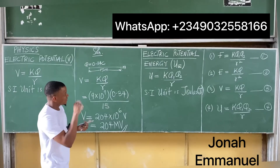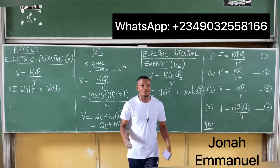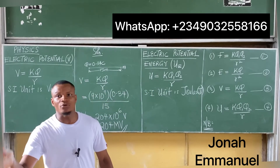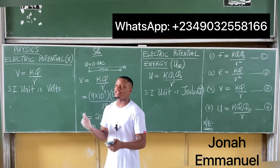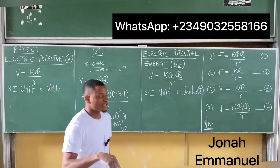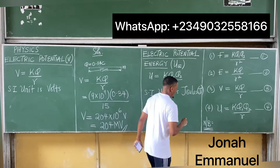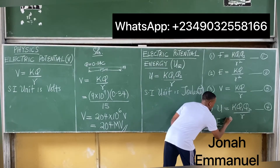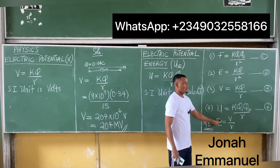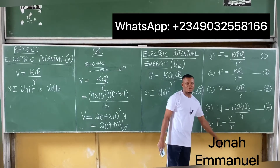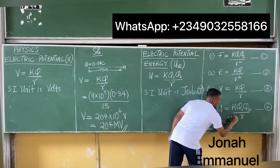An important note: electric field intensity and electric potential are related by E = V/r, where r is the distance of separation. So electric field equals electric potential divided by distance.